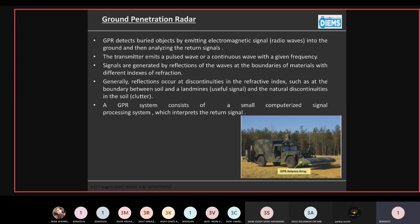Such as at the boundary between soil and landmine, which is considered in this case as useful signals, and the natural discontinuities in soil, which are known as clutters. The GPR technology consists of small computerized signal processing units, which interpret the return signals.